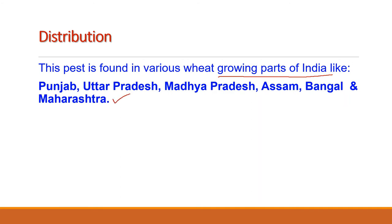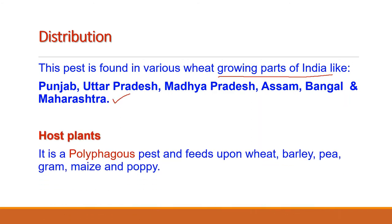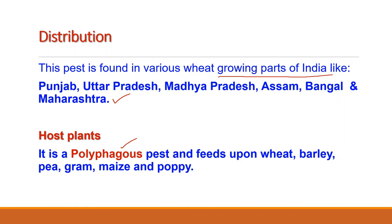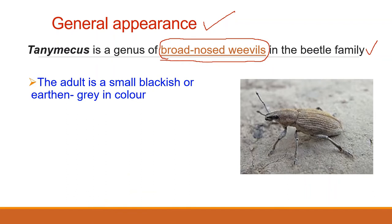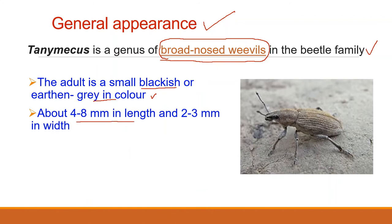It is a polyphagous insect, feeding on many plants like wheat, barley, pea, gram, maize and poppy. Tanymecus is a genus of broad-nosed weevils in the beetle family. The adult weevil is small in size, blackish or earthen gray in color, and is about 4 mm to 8 mm in length and 2 mm to 3 mm in width. It has a broad nose and is gray in color.